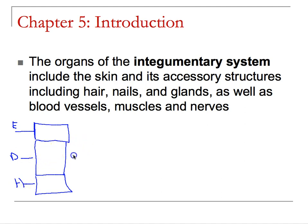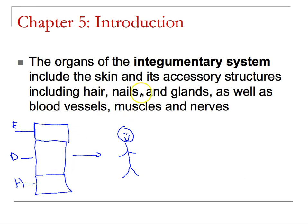What I want everyone to understand is that this system covers the entire body. Because it is a system containing all four tissue types, it has different responsibilities depending on where and when it is used. It also contains hair, nails, and glands, which are all made up of epithelia that take different shapes.